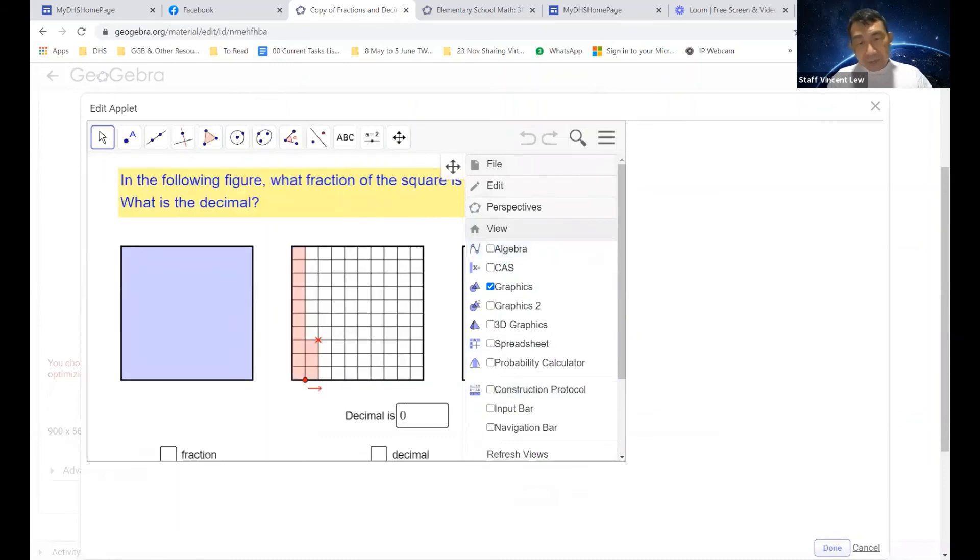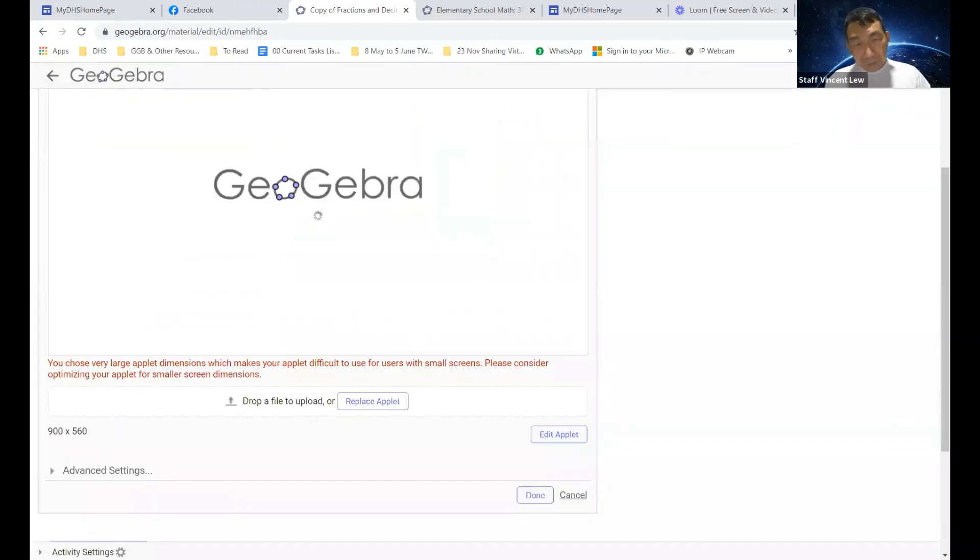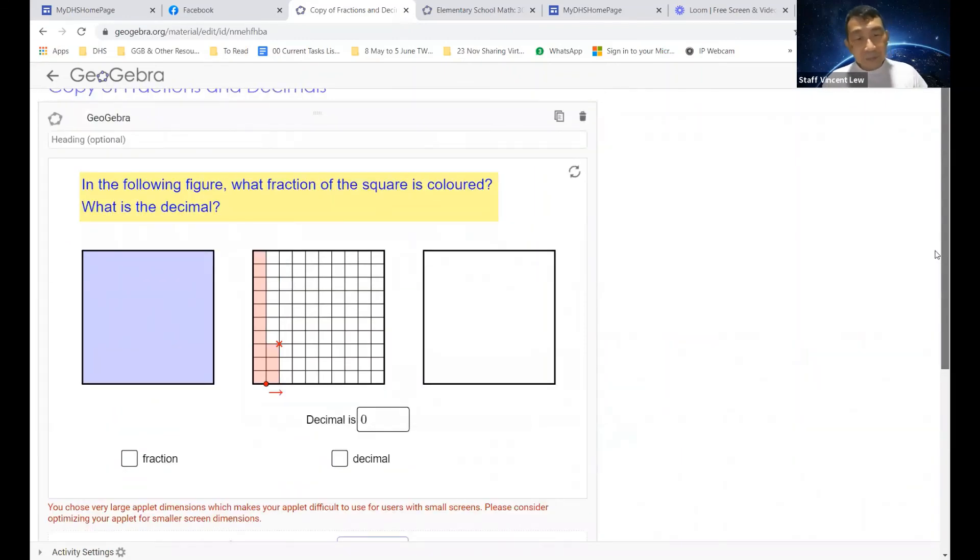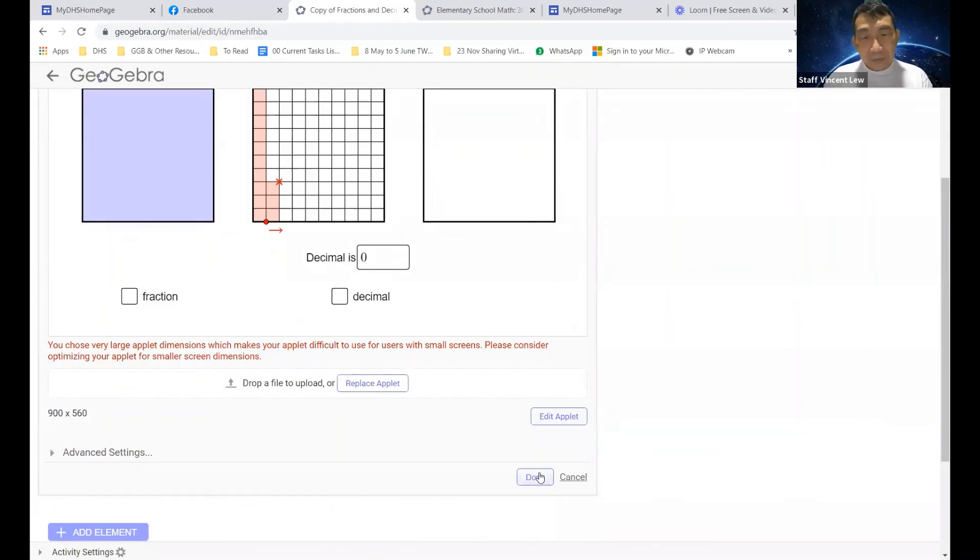So now we are back, and then we click done. No more algebra view, no more of algebra view. Then we click done, then save and close.